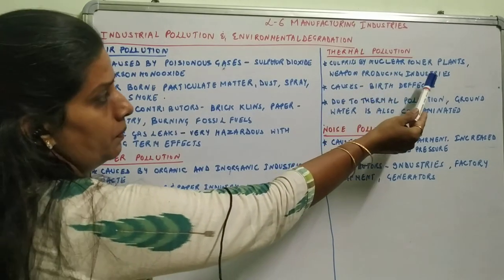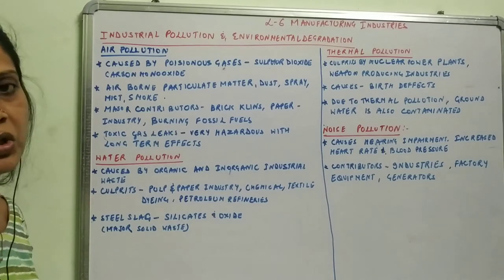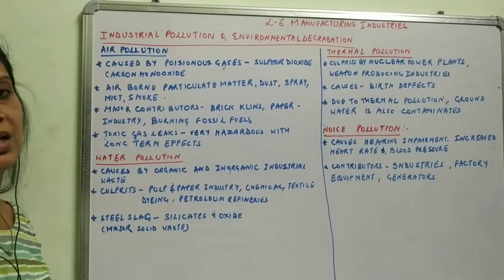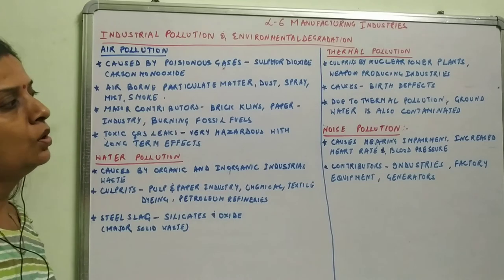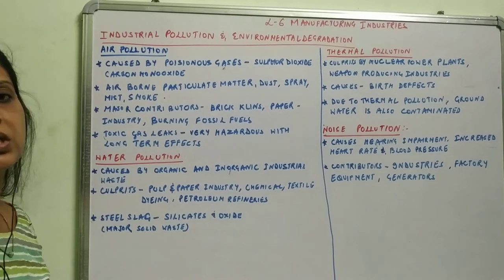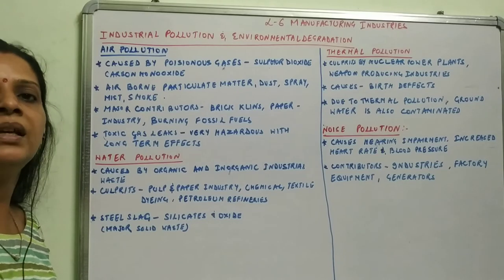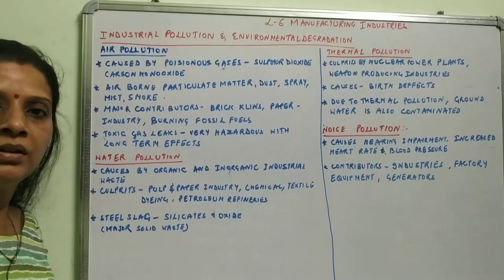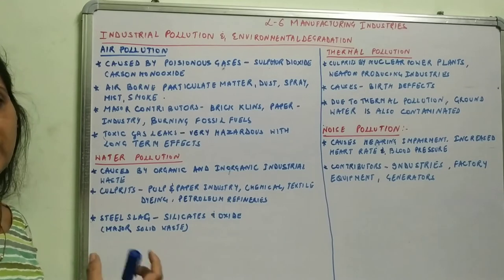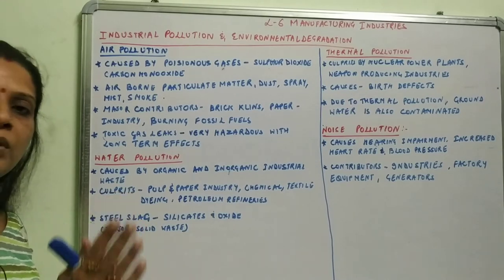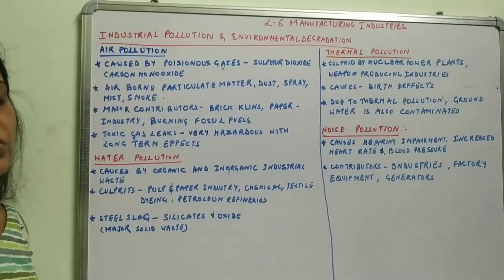In nuclear power plants and weapon-producing industries, pollution is caused by thermal reactors, which can cause birth defects. Thermal pollution also contaminates groundwater through the hydrological cycle — the water cycle — because polluted water returns to the Earth's surface in the form of rain and then pollutes the underground water.